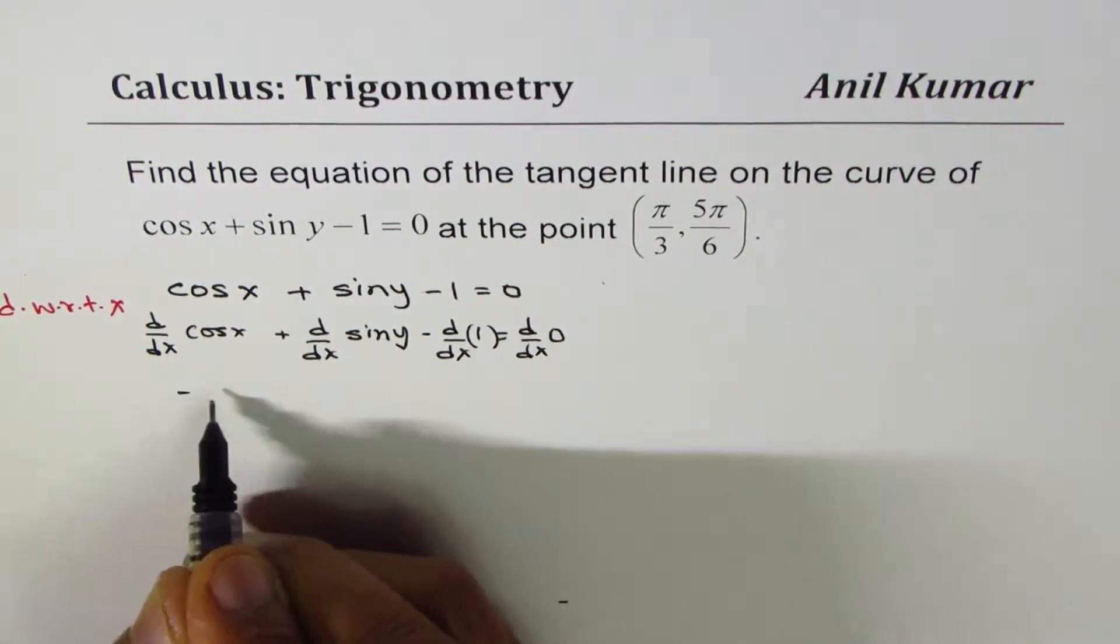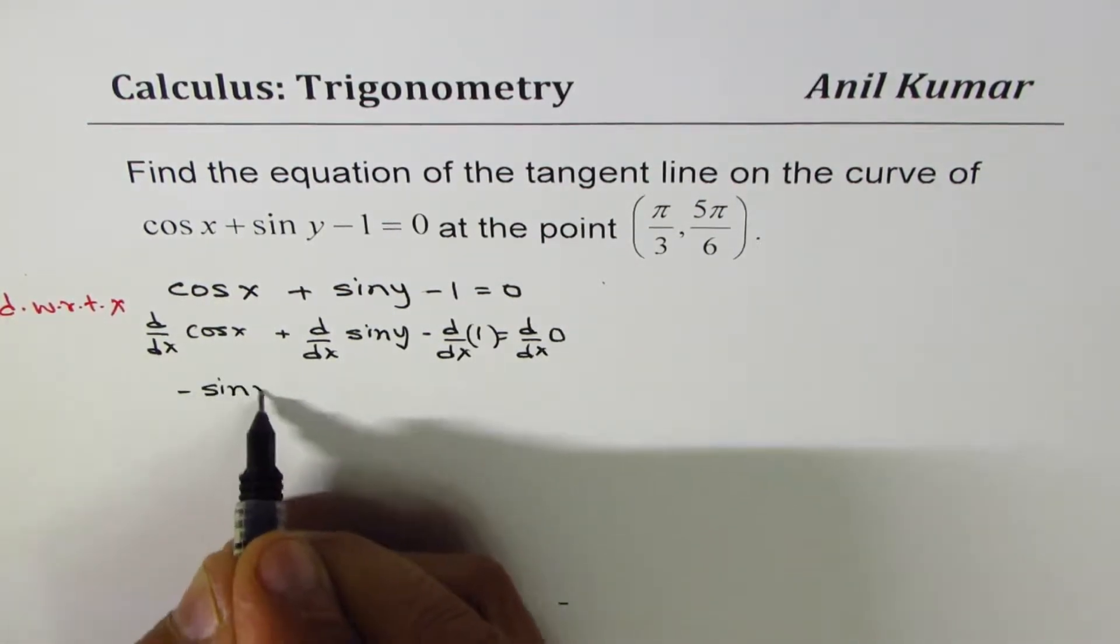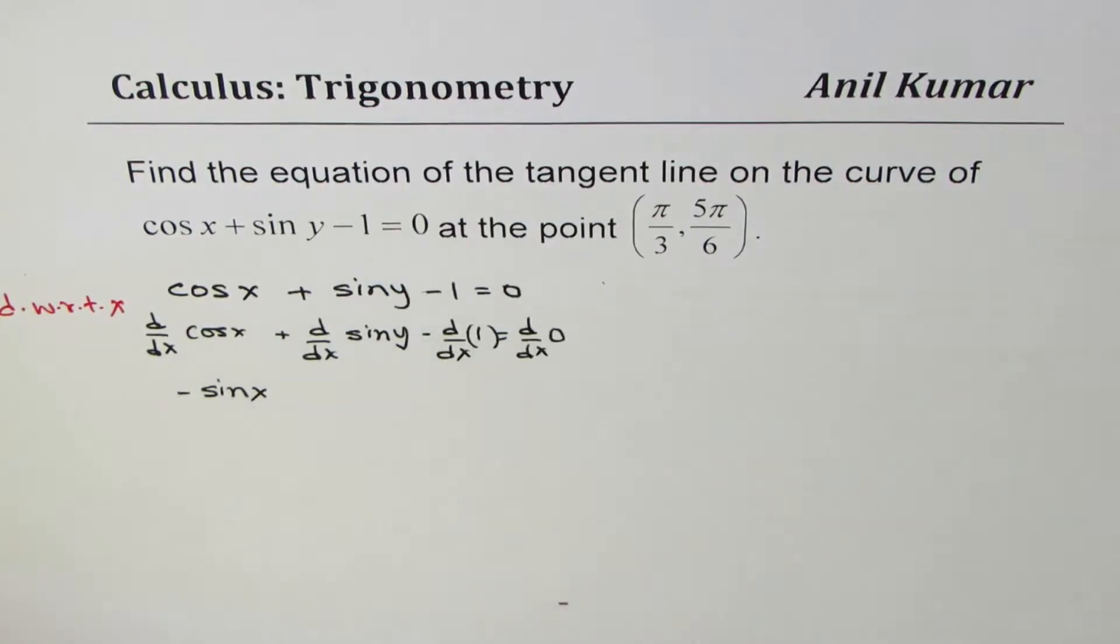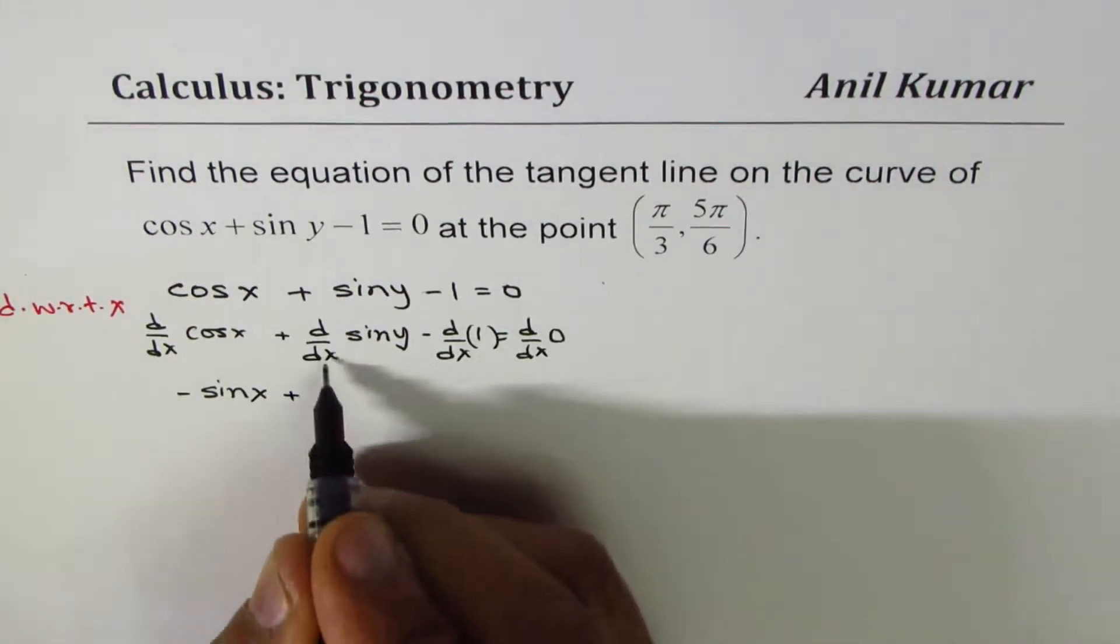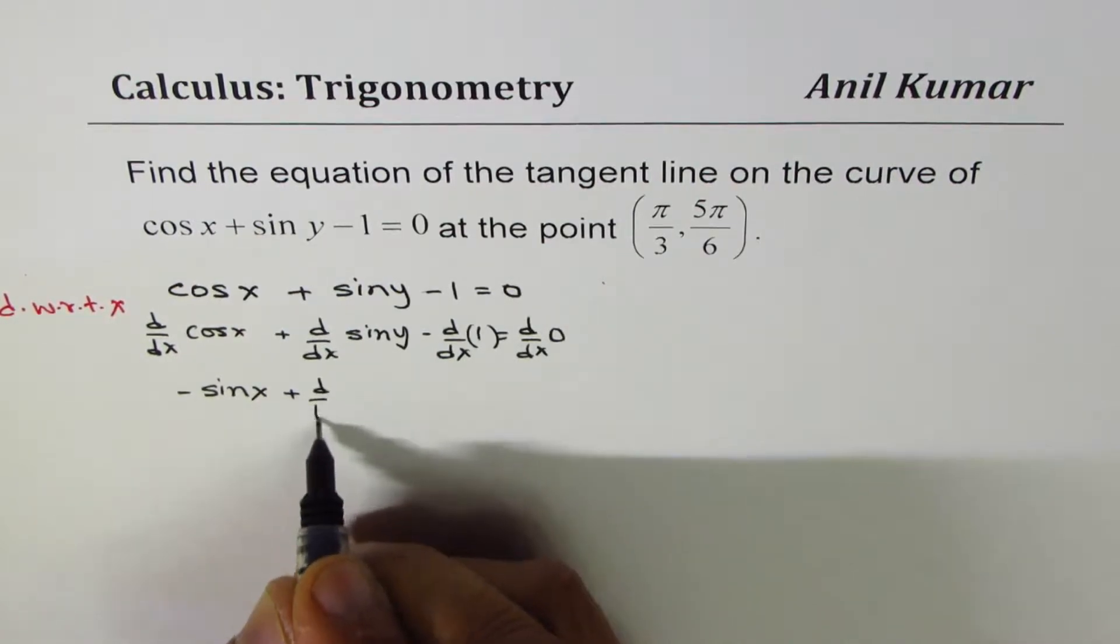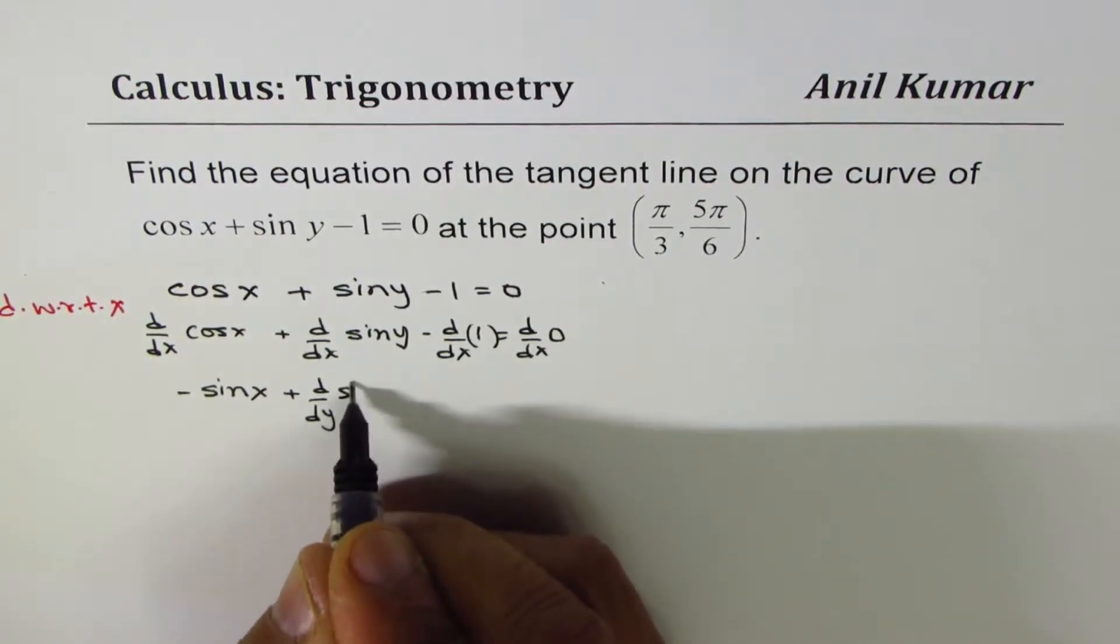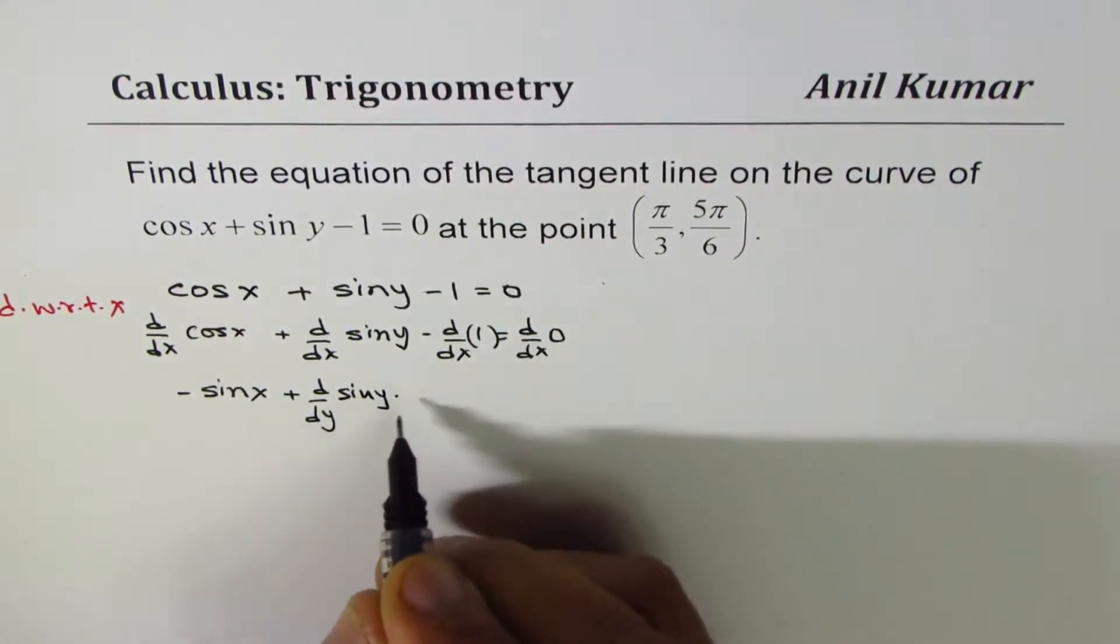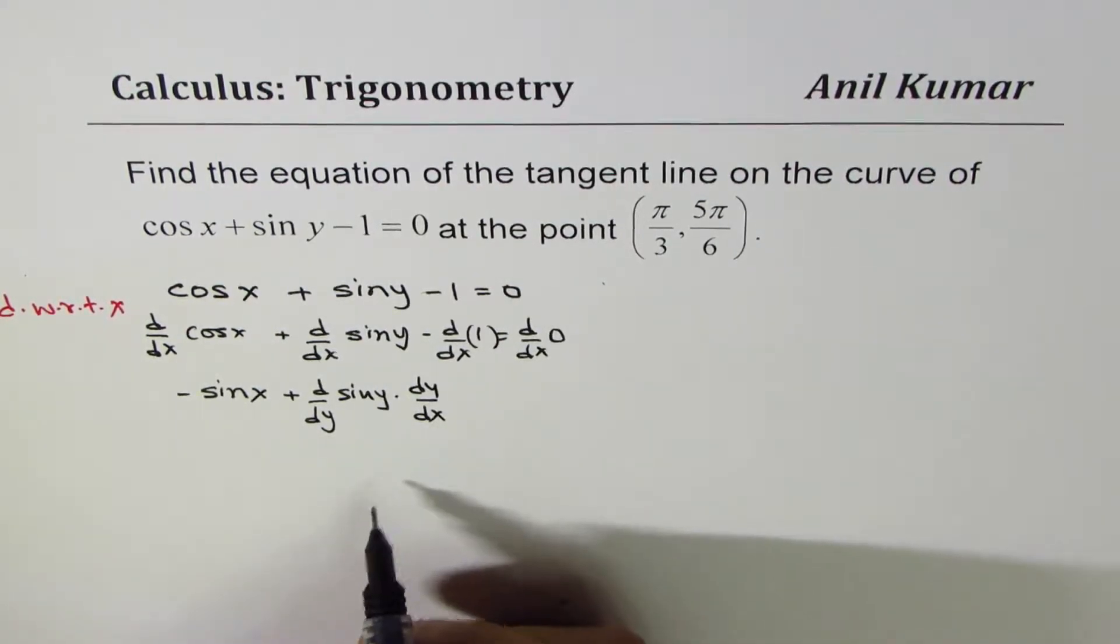The derivative of cos x is minus sin x. Now, here we have the derivative of sin y, so we could write this as d/dy of sin y times dy/dx. That is implicit derivation.